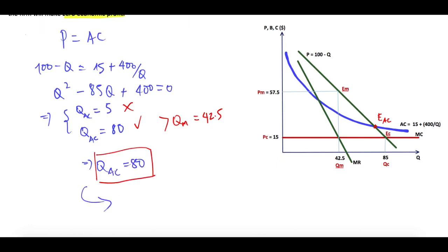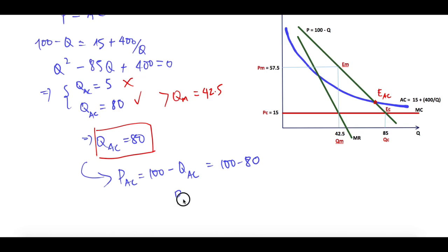And replace this value into the demand curve. You get PAC equals 100 minus QAC, which equals 100 minus 80, or PAC equals 20. So in the graph, from the intersection point down here you get 80, or QAC. And the price equals AC, so you correspond to this point, then you get PAC equals 20.